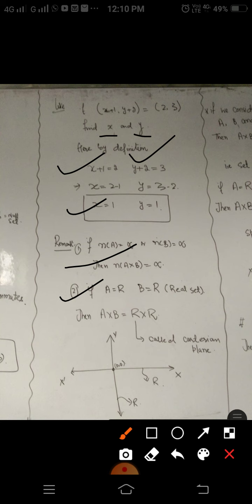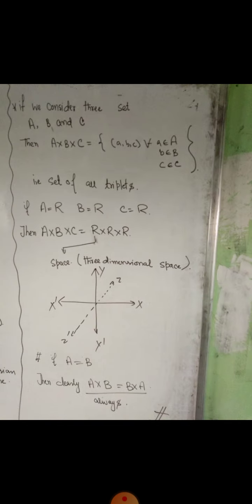If A equals the set of real numbers ℝ and B equals ℝ, then A cross B is simply ℝ cross ℝ. This is nothing but the two-dimensional plane, which is simply called the Cartesian plane. In the Cartesian plane we have two axes — the x-axis and the y-axis — where both axes represent sets of real numbers represented by a straight line.